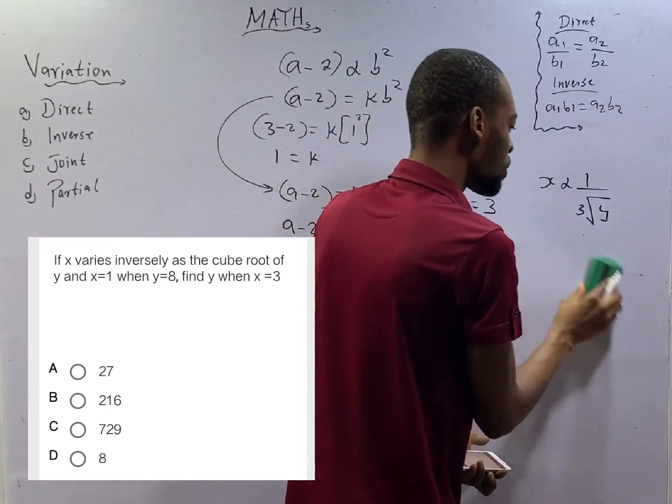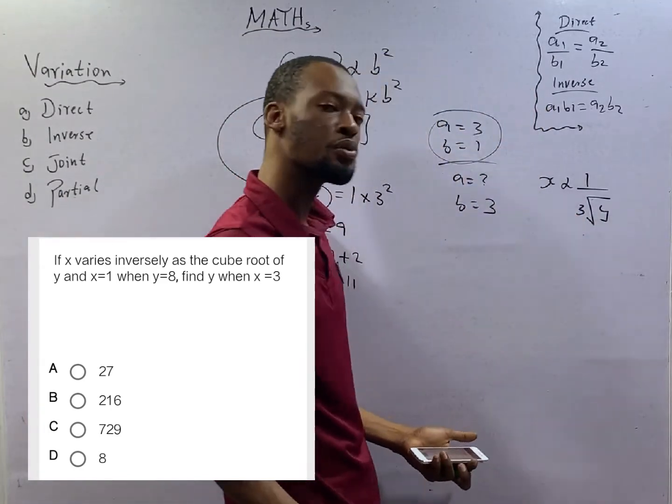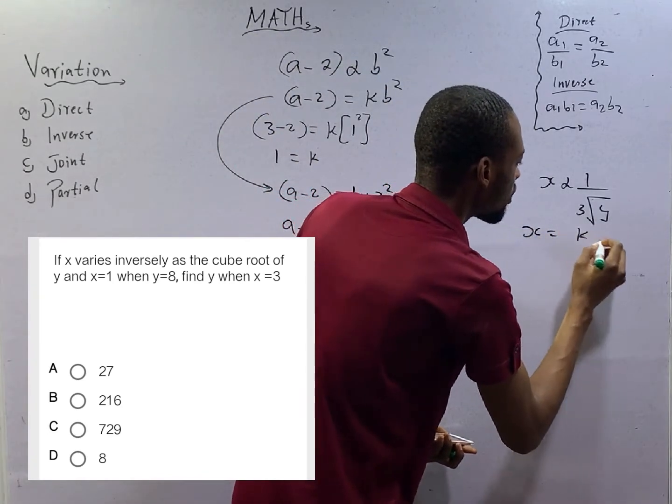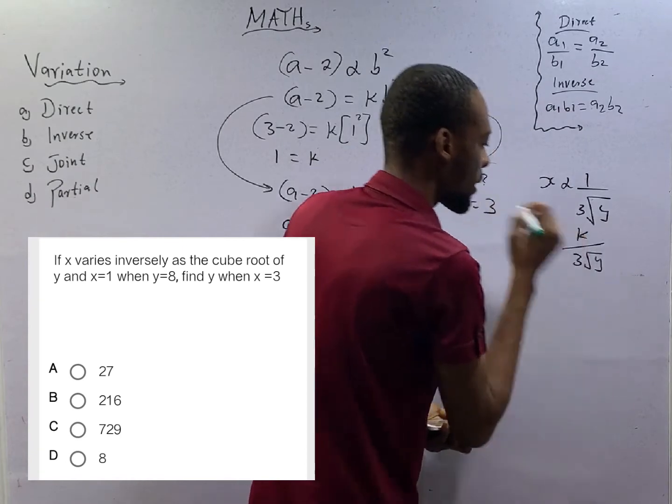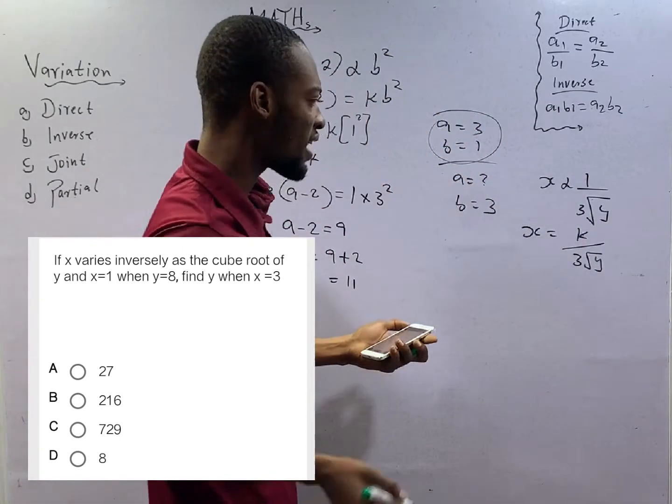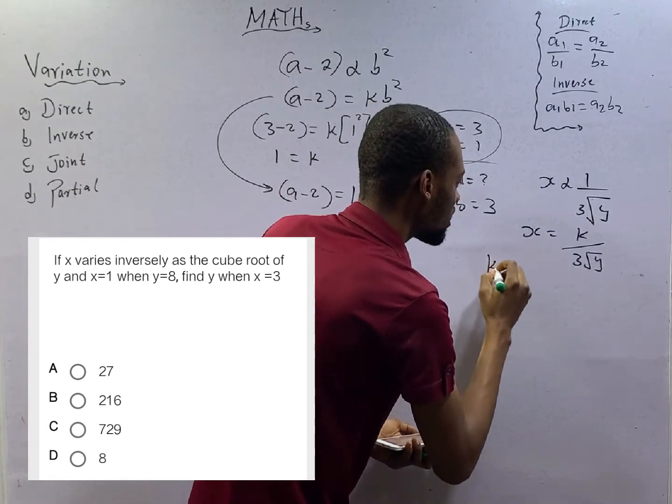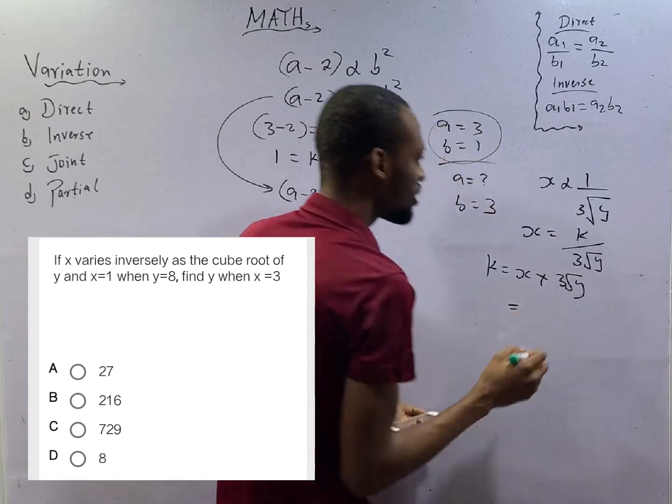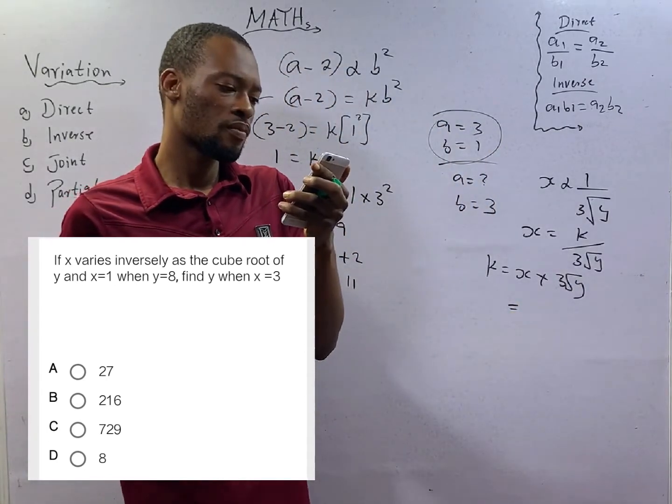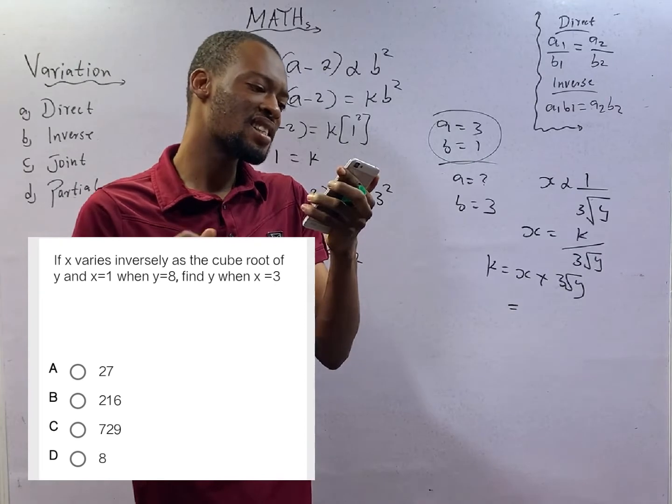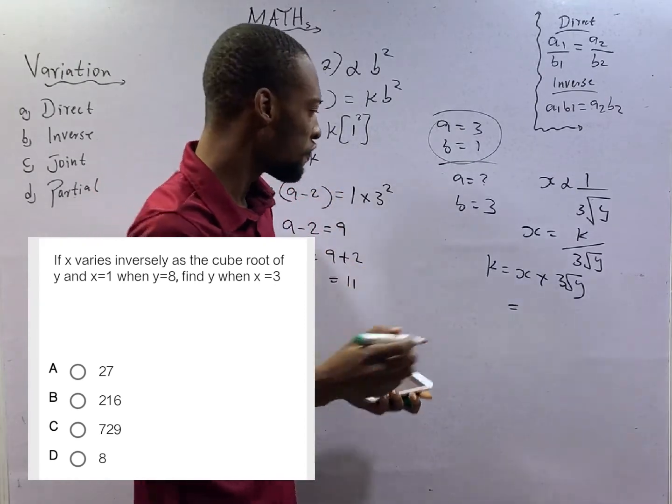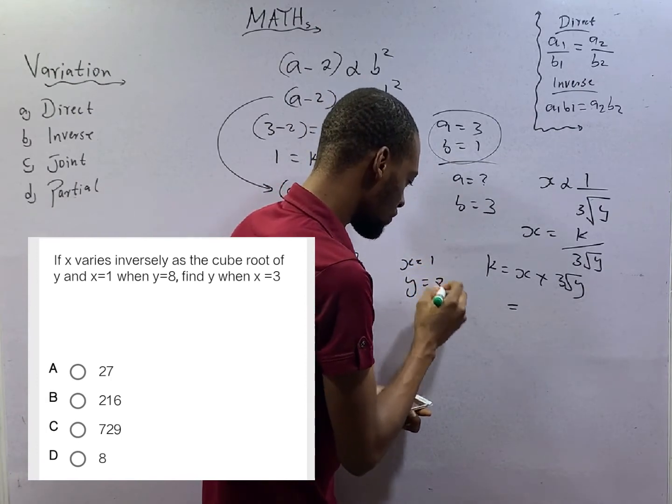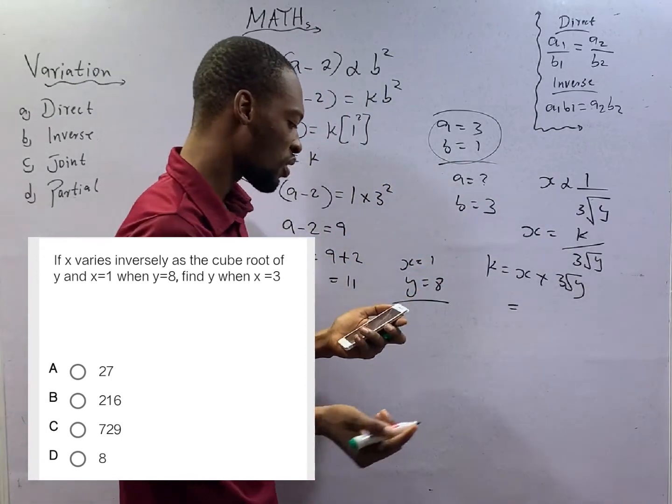Please take note of the differences between cube and cube root. From here, this is x equals k over cube root of y. From here, proportionality constant k equals x times cube root of y. And this is, they said, and x equals 1 when y equals 3, the first condition. x equals 1 when y equals 8. The second condition. Find y.